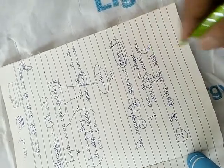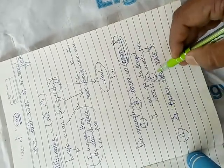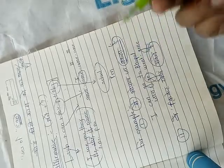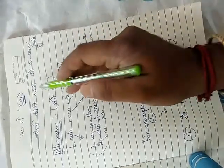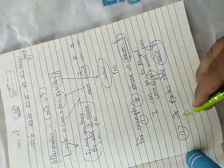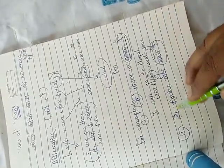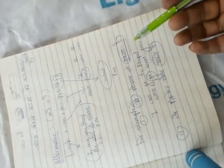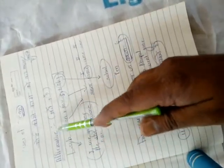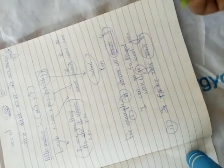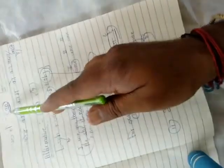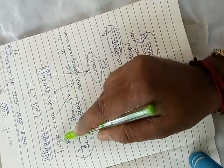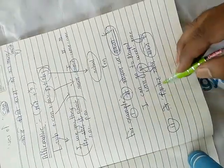Second example: 'bae cricket khehl sakte hai.' 'Sakte hai' confirms the use of 'can'. In this sentence there is no 'not' and no question mark, so which type of sentence is it? Affirmative sentence. So we have to follow the affirmative structure of 'can'.